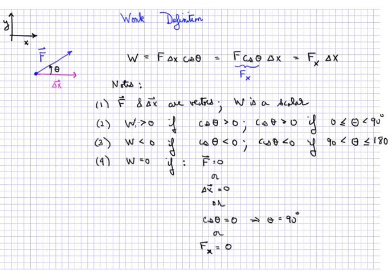Secondly, W is greater than zero depending upon what the value of cosine is. If the cosine is greater than zero, W is greater than zero. But cosine theta is greater than zero if theta ranges from zero up to, but not including, 90 degrees.